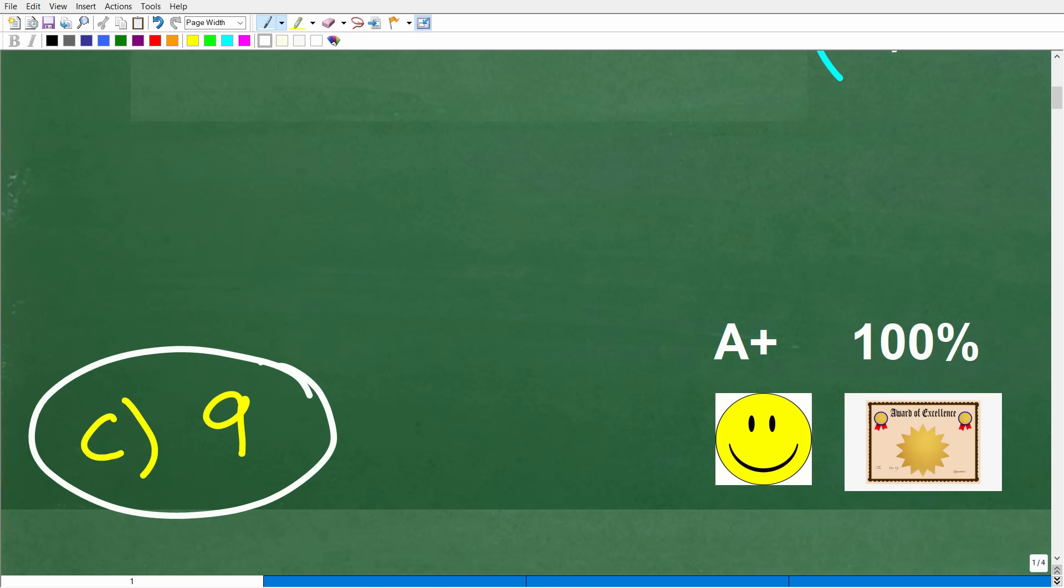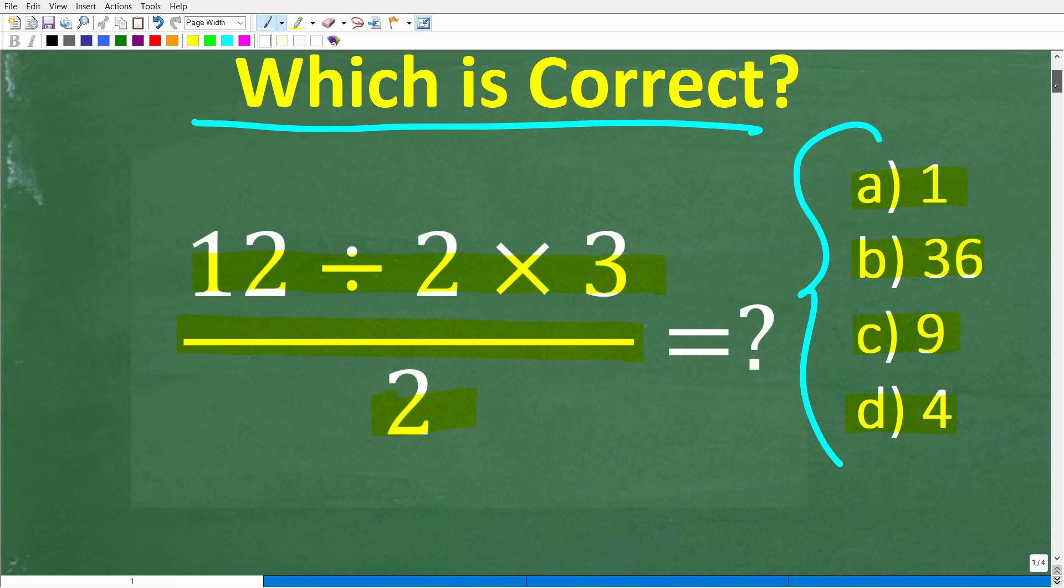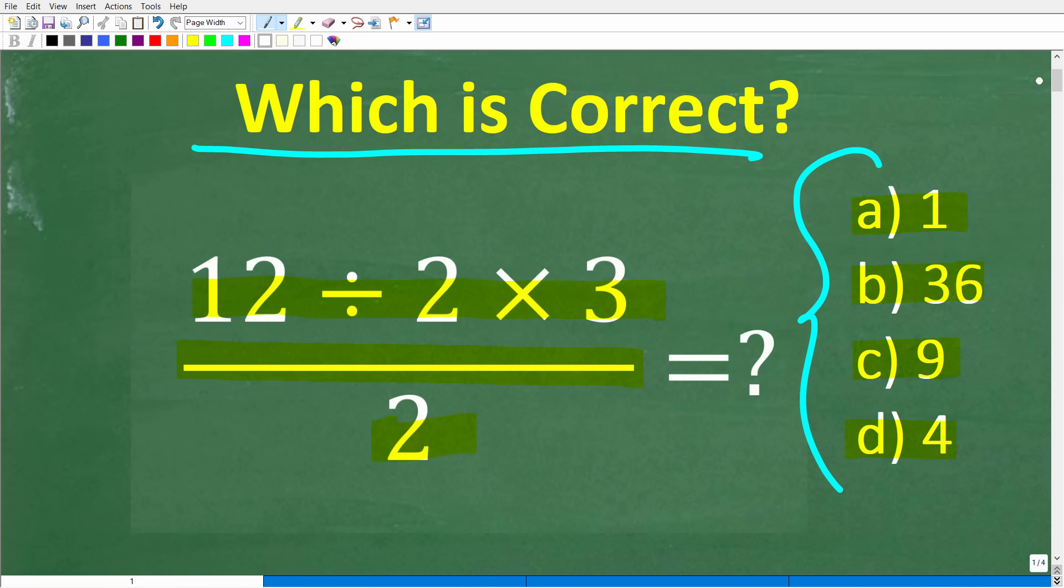All right, now, how did you do? Well, if you got this right, well, you definitely get a happy face, an A+, a 100%, and a Certificate of Excellence for being a certified professional in the area of order of operations. Because if you didn't get this right, you probably made an error with something called PEMDAS.